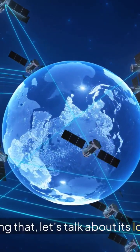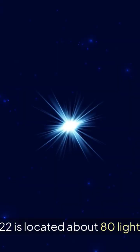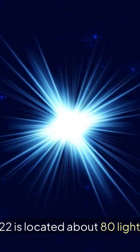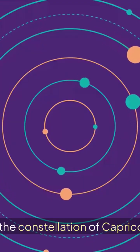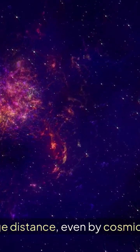Following that, let's talk about its location. PSO J311.522 is located about 80 light-years away. It's in the constellation of Capricornus. That's a huge distance, even by cosmic standards.